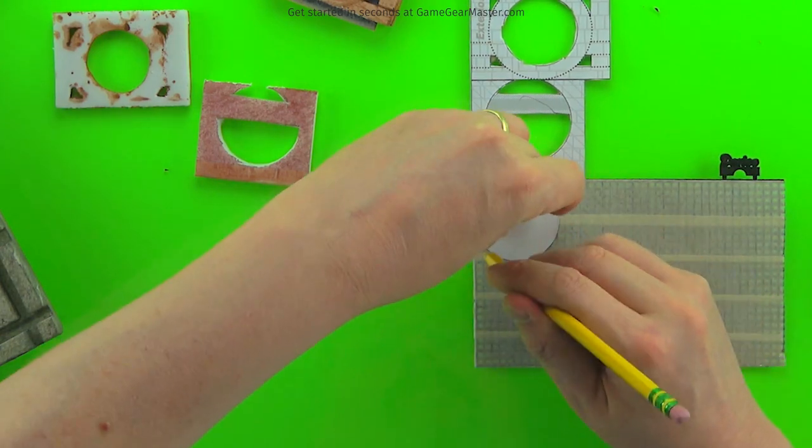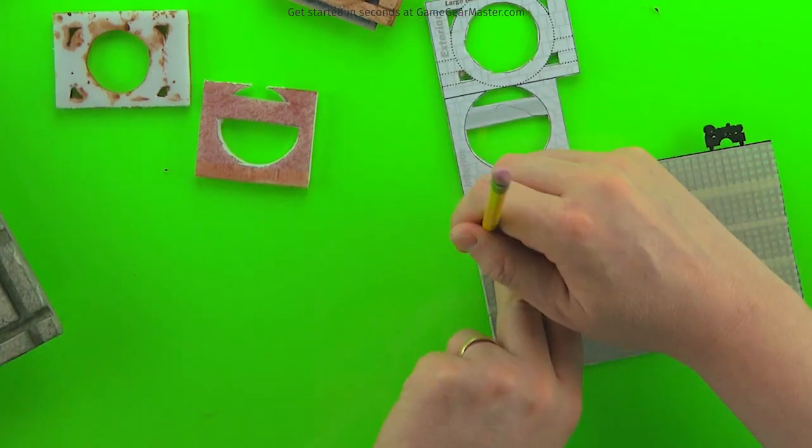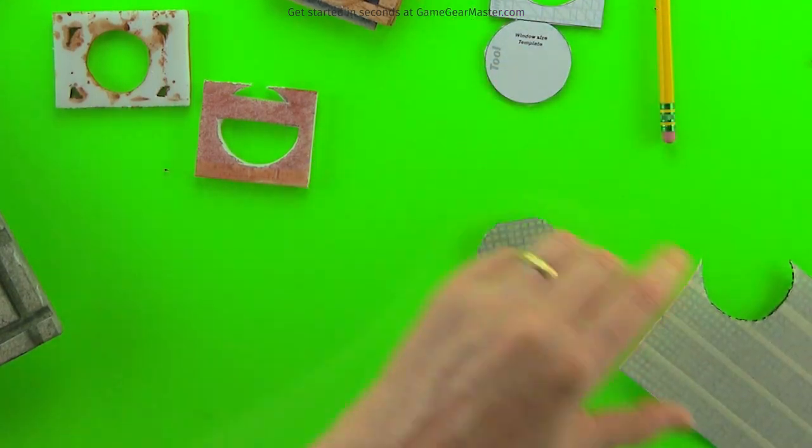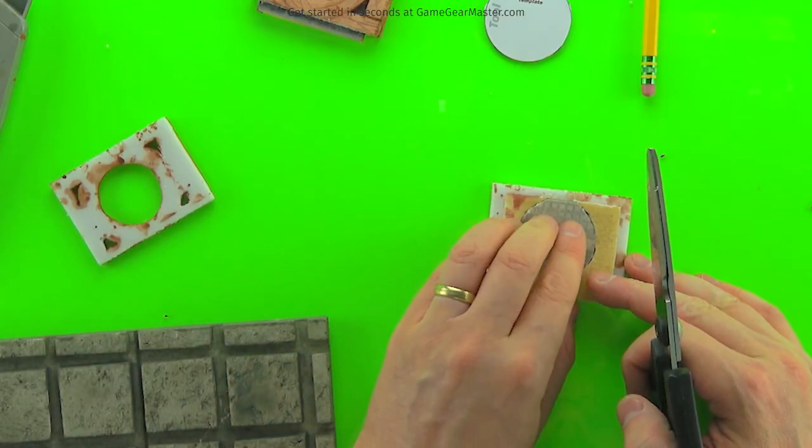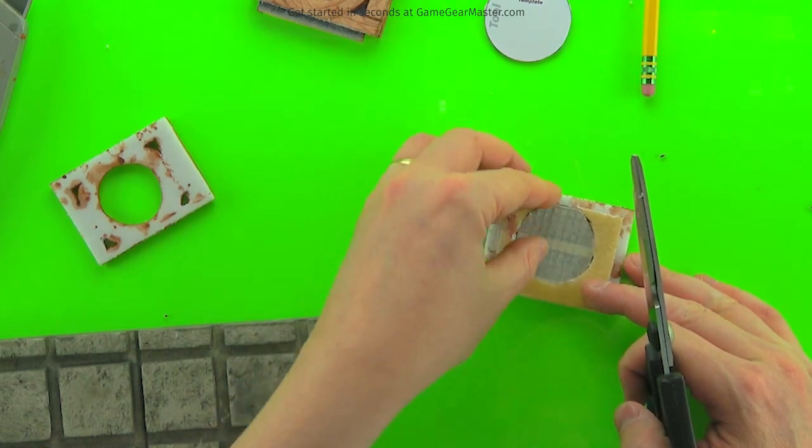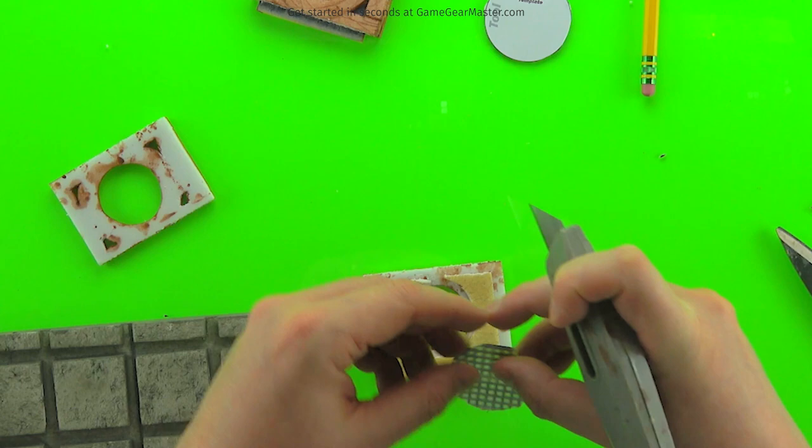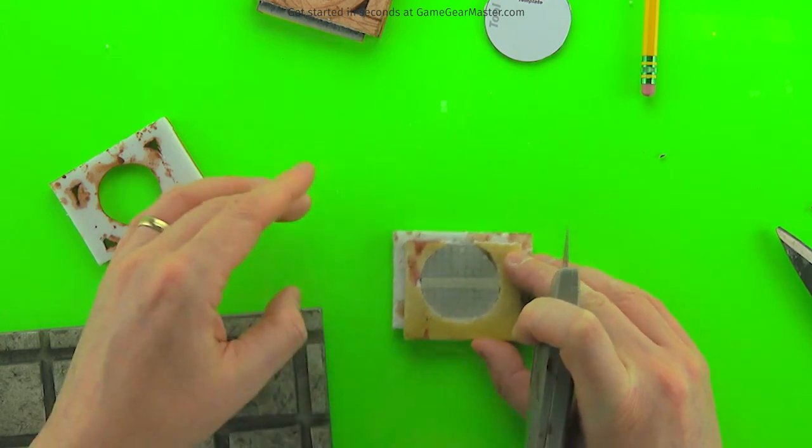And we're just going to trace out our window using the window tool, just like we did for the other one. And again, you're going to need to adjust the size of this a little bit probably. That's a little tight, so I'm going to loosen that up a little bit with some trimming. There you go, take off the masking tape.